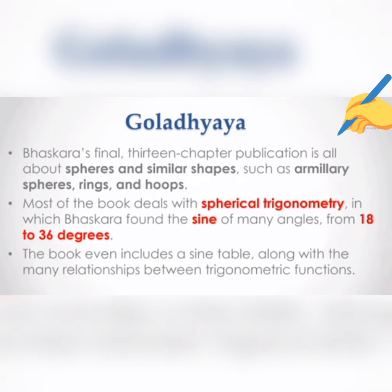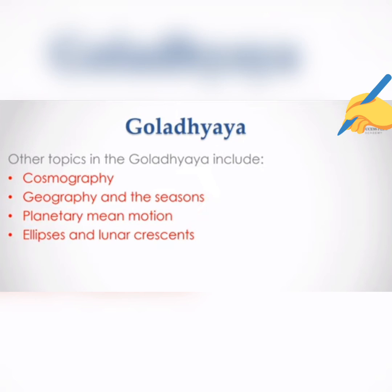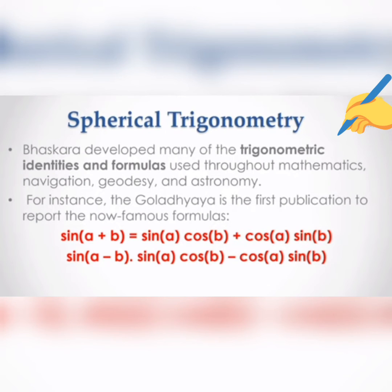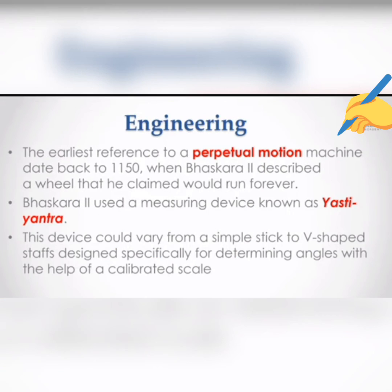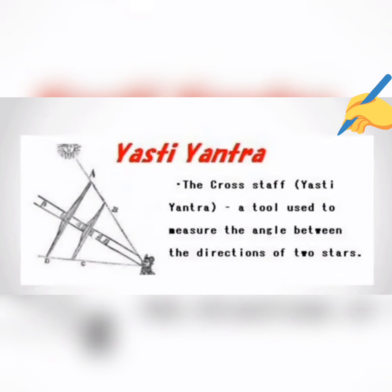Bhaskara Second's final 13-chapter publication, Gola Adhyay, is all about spheres and similar shapes such as armillary spheres, rings, and hoops. He also used a measuring device known as the Yasti Yantra, a tool used to measure the angle between the directions of two stars.